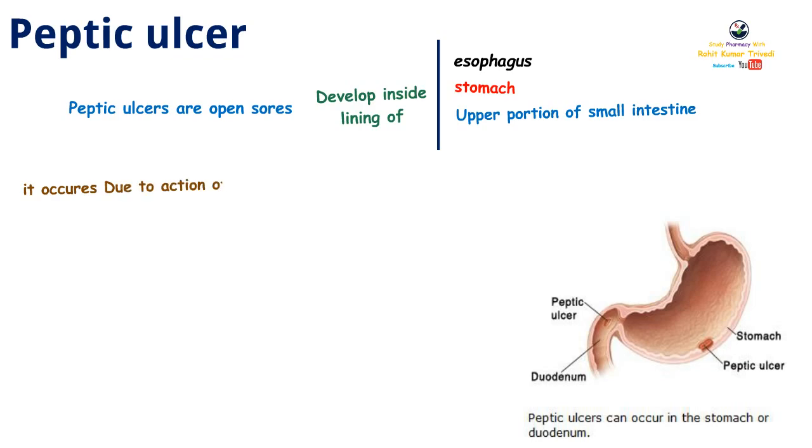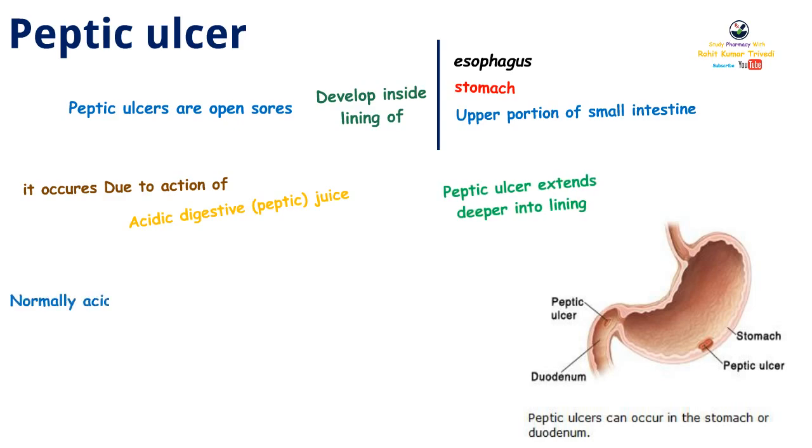Peptic Ulcer occurs due to the reaction of acidic digestive peptic juices, and it extends deeper into the lining.